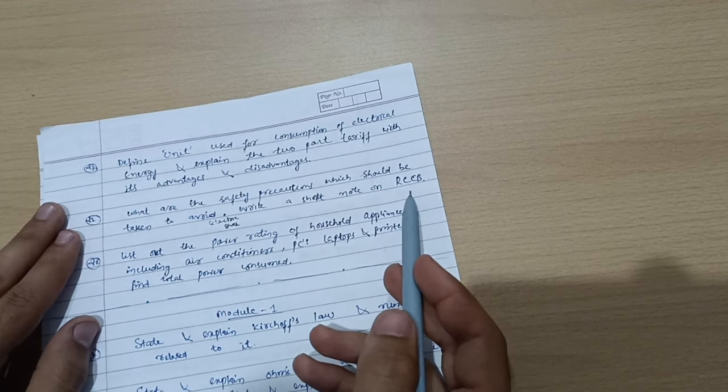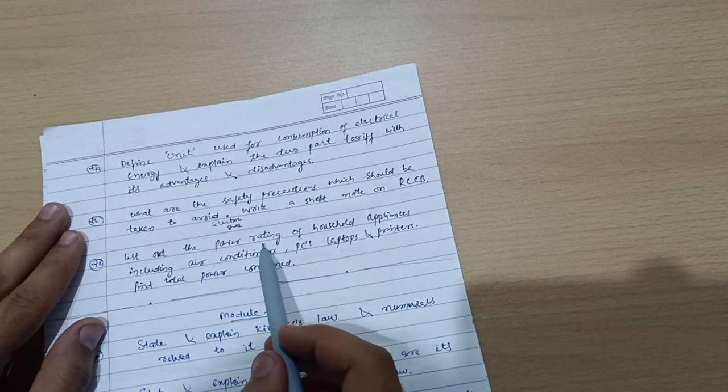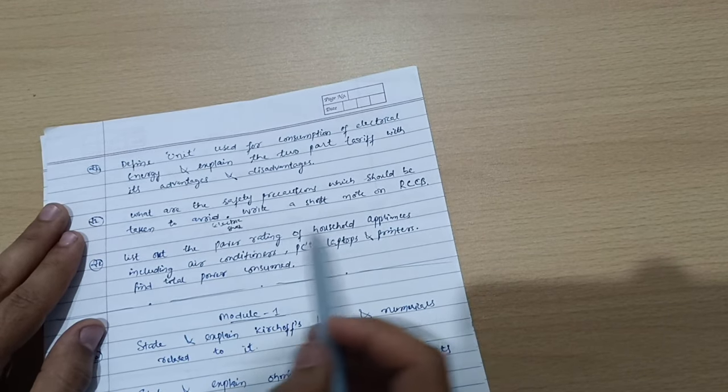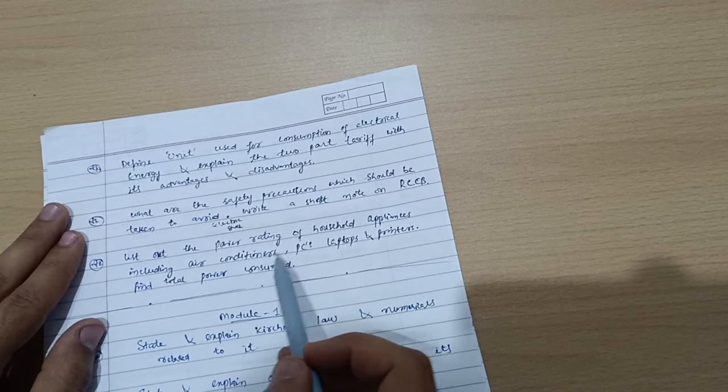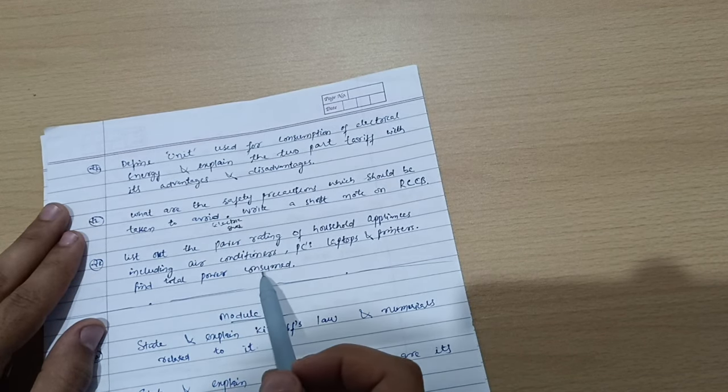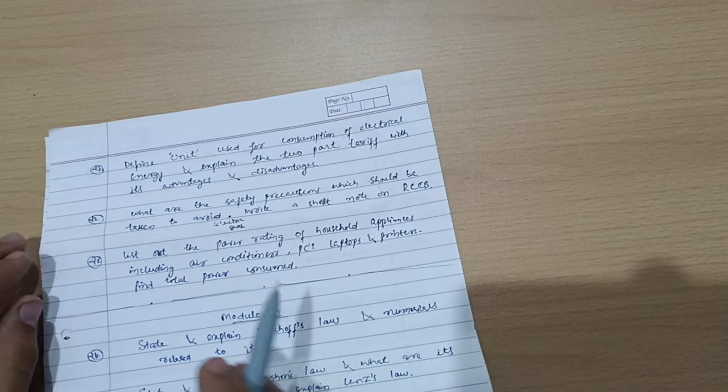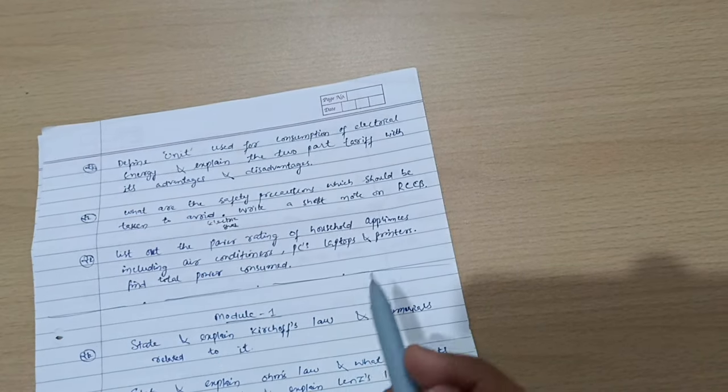It is not RCB, Royal Challengers Bangalore. It is RCCB. List out the power rating of household appliances including air conditioner, PCs, laptops and printers, find total power consumed. This much is enough to cover Module 5.